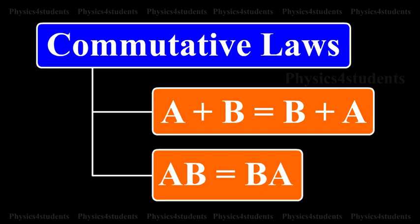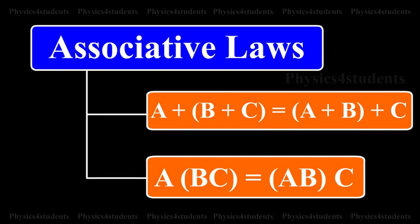Commutative laws: A or B is equal to B or A; A and B is equal to B and A. Associative laws: A or (B or C) is equal to (A or B) or C; A and (B and C) is equal to (A and B) and C.